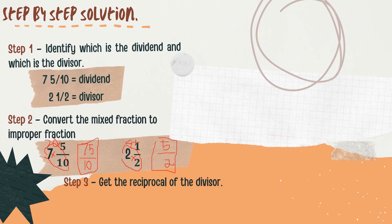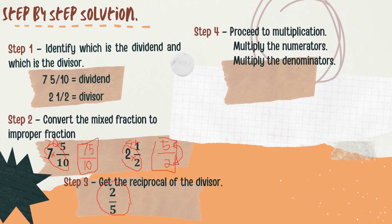Step 3: Get the reciprocal of the divisor. The divisor is 5 over 2. So interchange the denominator and numerator — it becomes 2 over 5. Step 4: Proceed to multiplication. Instead of division, we're going to multiply. Multiply the numerators: 75 times 2 is 150. Multiply the denominators: 10 times 5 is 50.